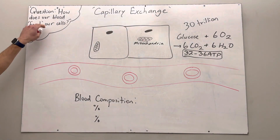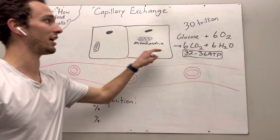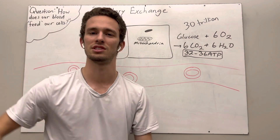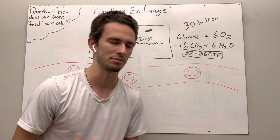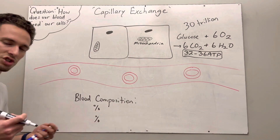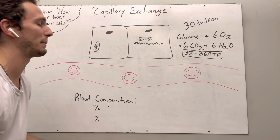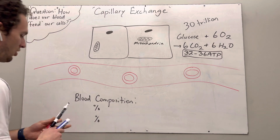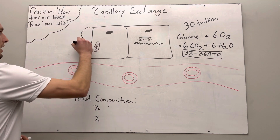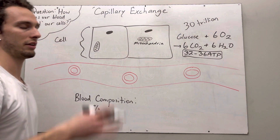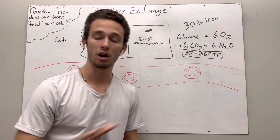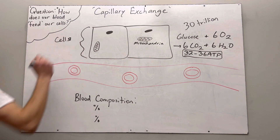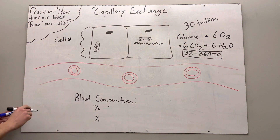So the goal of that cell respiration equation is to get glucose and oxygen into our cells so we can produce ATP. The question is: how does our blood actually feed our cells these two main nutrients, as well as amino acids, electrolytes, and vitamins? To understand this, we need to look at three main areas. On this diagram we have the cells of your body — liver, muscle, skin — they all need a blood supply to stay alive.